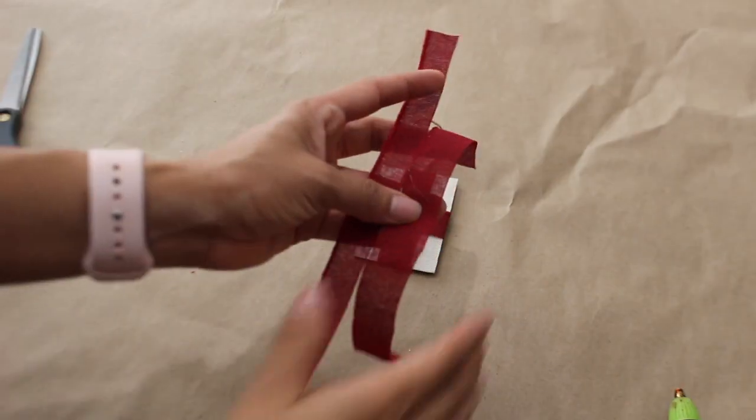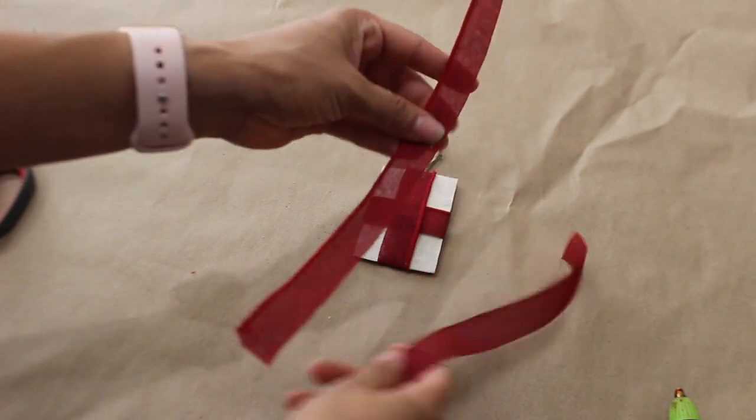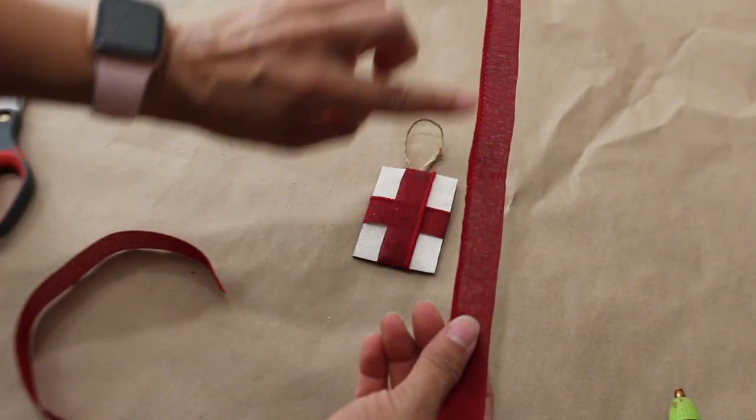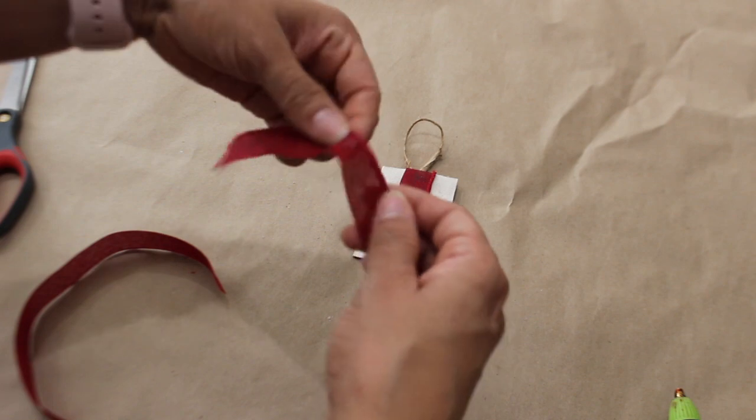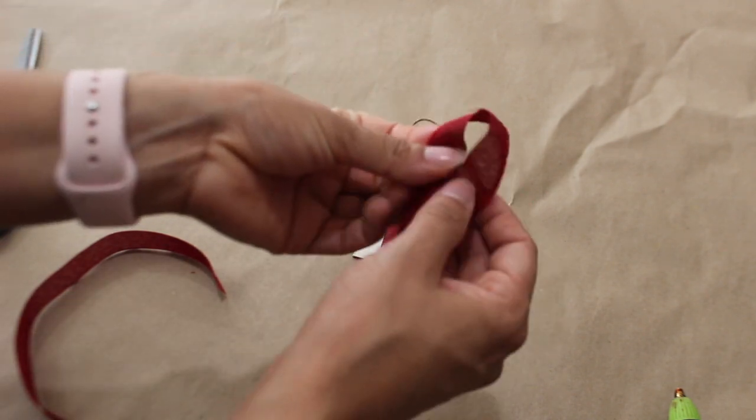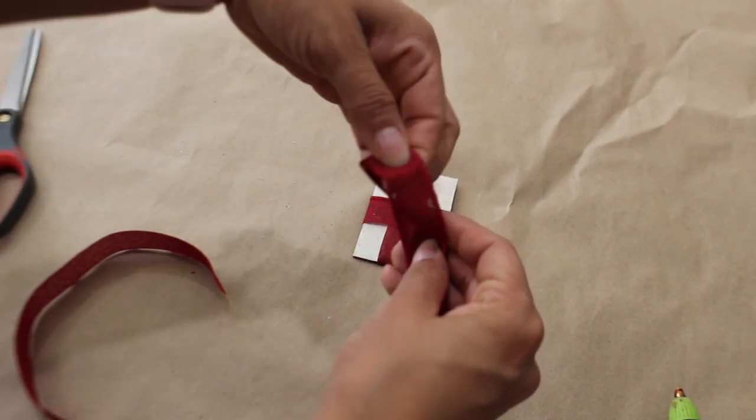I cut the other two pieces and I'm going to use the edge since it has that wire. This is a wired ribbon and it's just easier to maneuver it while I'm making a little bow out of it.